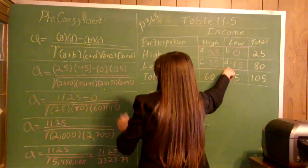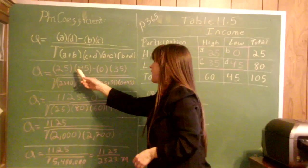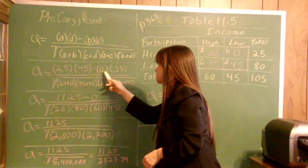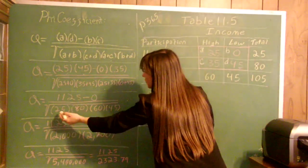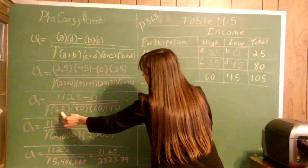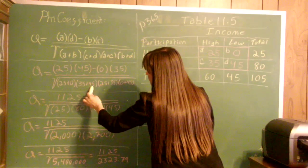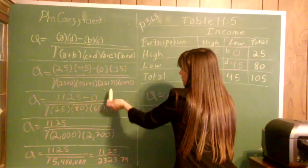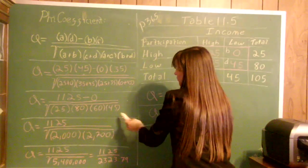Now that we have it filled in, 25 times 45 equals 1,125, minus 0 times 35, which is 0. This is over the square root of: 25 plus 0 equals 25; then C plus D, which is 35 plus 45 equals 80; A plus C, which is 25 plus 35 equals 60; and B plus D, which is 0 plus 45 equals 45.